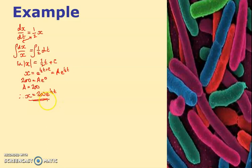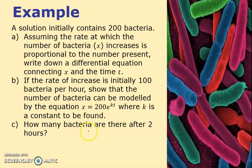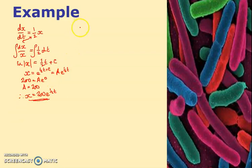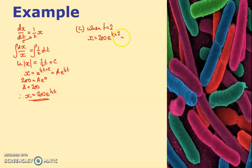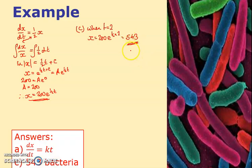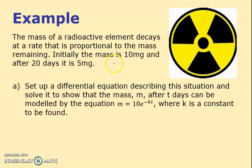Part c asks how many bacteria there are after two hours, so when t equals 2: x equals 200 e^(1) — that's 200 times e, which gives approximately 543 bacteria.